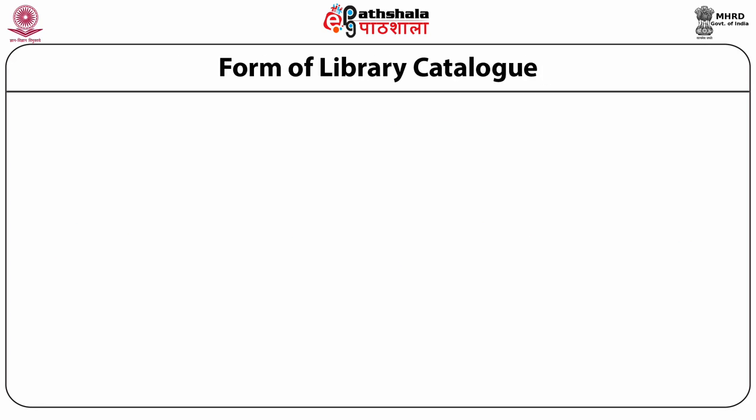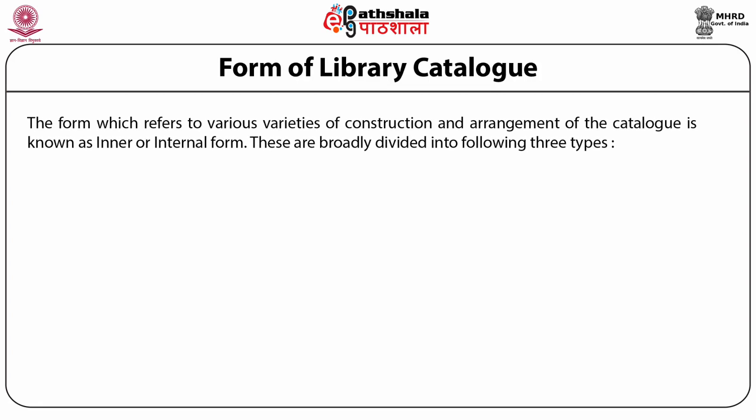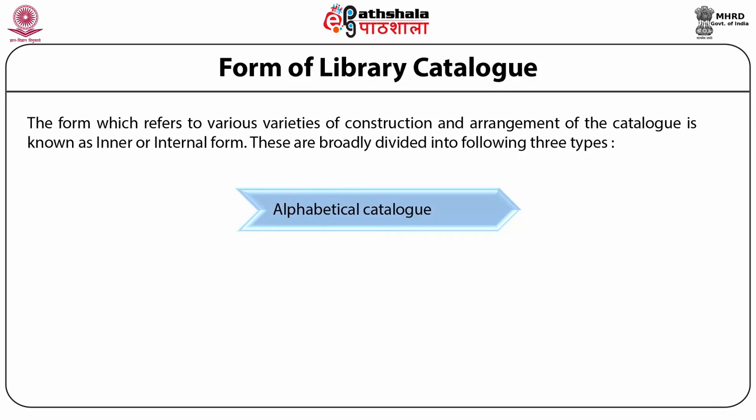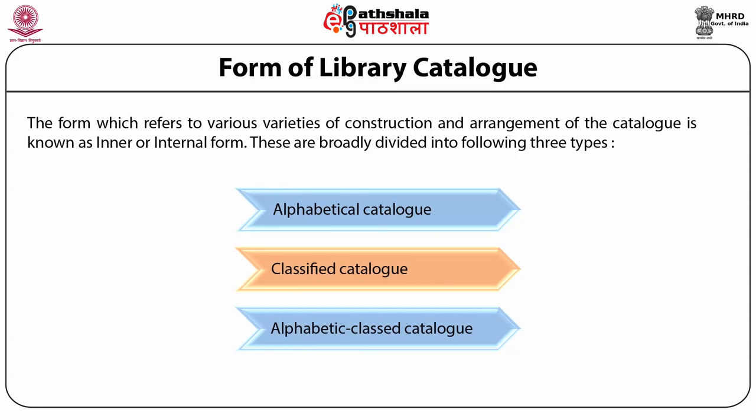The second part of the module covers the inner or internal forms of library catalog — the forms which refer to various varieties of construction and arrangement of the catalog. These are broadly divided into three types: alphabetical catalog, classified catalog, and alphabetic class catalog.